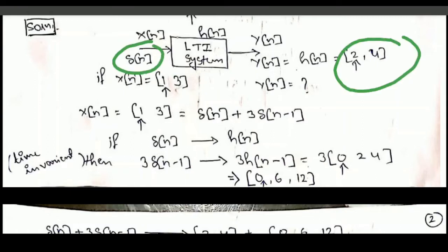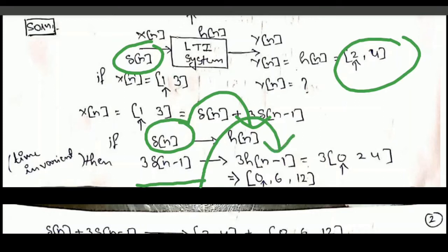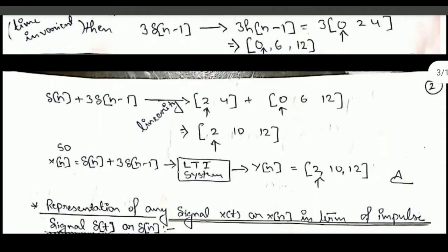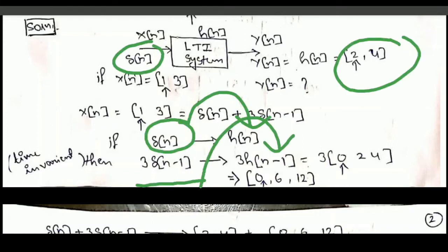As we know, if impulse δ[n] is applied, then the output is h[n] = {2, 4}. The input is a combination of δ[n] and 3δ[n−1]. As the input is shifted by δ[n−1], the output is also shifted with the same delay of minus 1, because the system is an LTI system — a time-invariant system. A delayed input reflects in the output with the same delay.